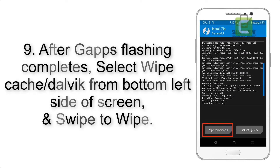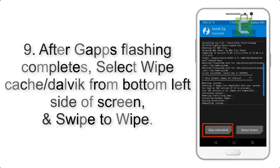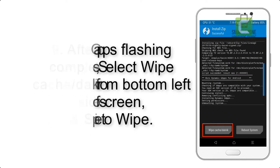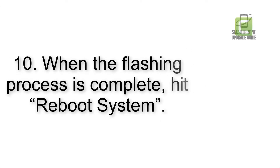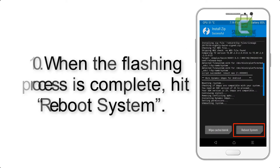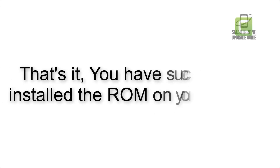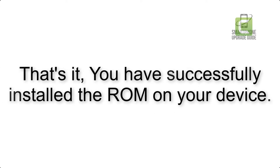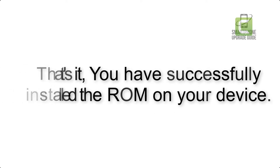Step 9: After GApps flashing completes, select Wipe Cache and Dalvik from the bottom left side of the screen and swipe to wipe. Step 10: When the flashing process is complete, hit Reboot System. That's it — you have successfully installed the ROM on your device.